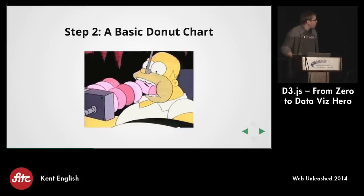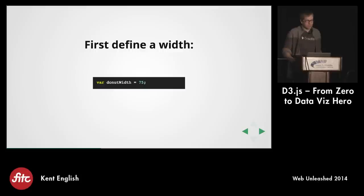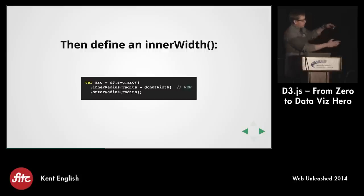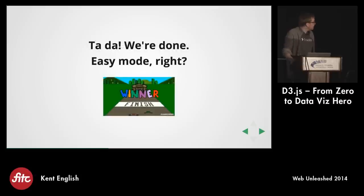We have our pie chart, but now we're going to switch it into a donut chart — basically we want to cut a hole in it. D3 actually makes this very easy. First we define a donut width of 75 pixels. On our arc function, where previously we were just defining the outer radius, now we define our inner radius, setting it to be the donut width less than the radius. Starting from center, it goes out with nothing until the inner radius, then has the chart until the outer radius. Inner radius is zero by default, which is why without it you get a circle. Once you define it, you end up with an annulus. That's all we have to do — easy mode.